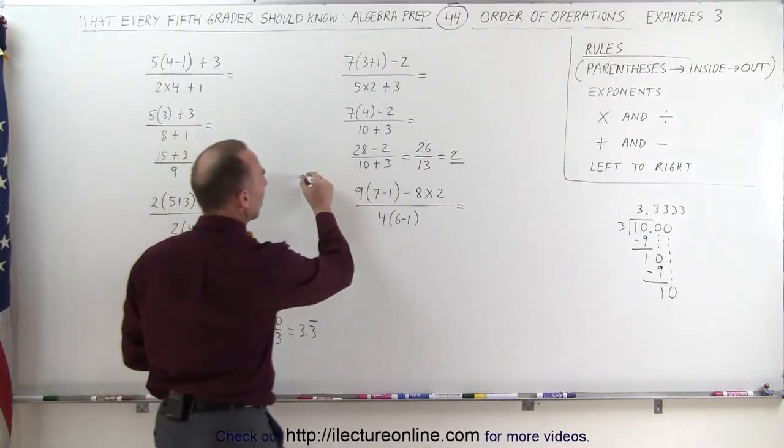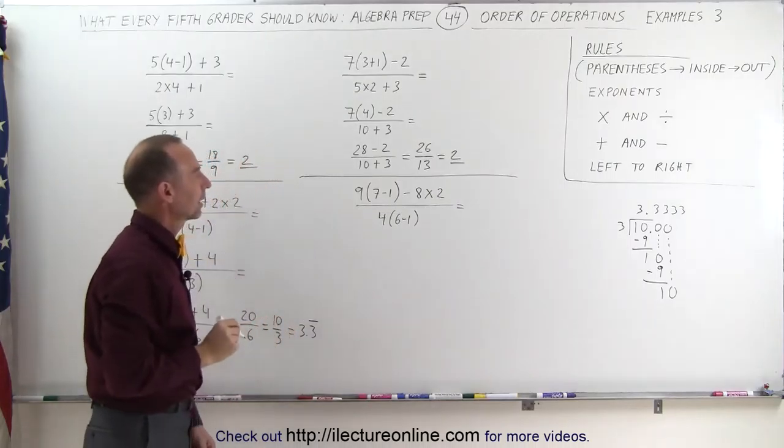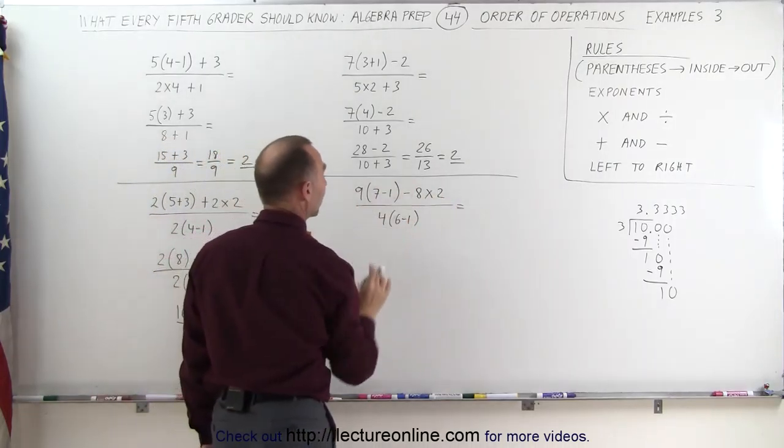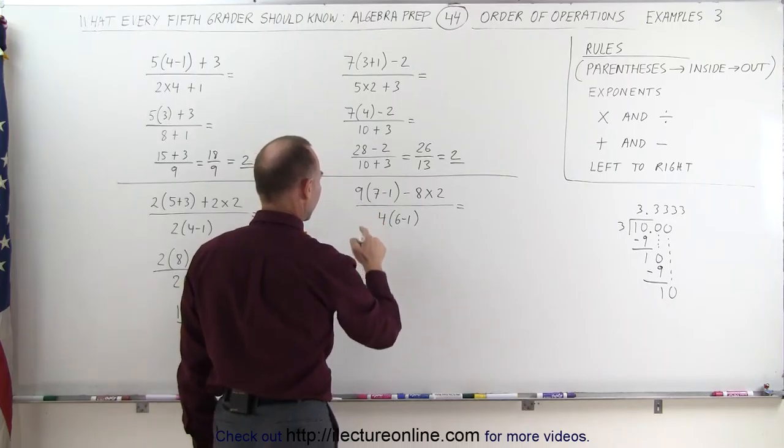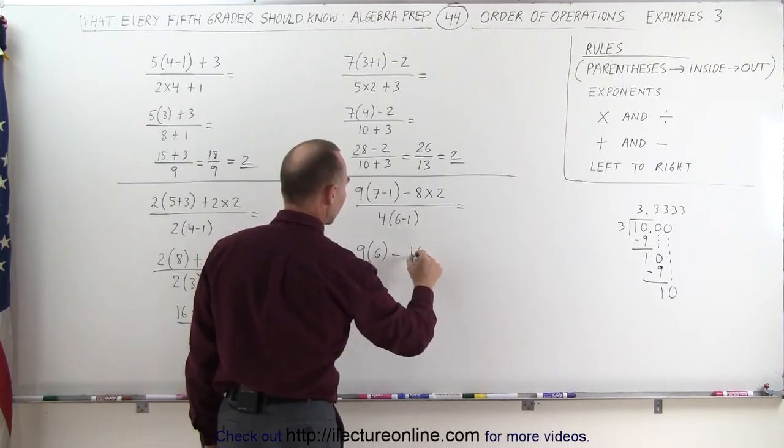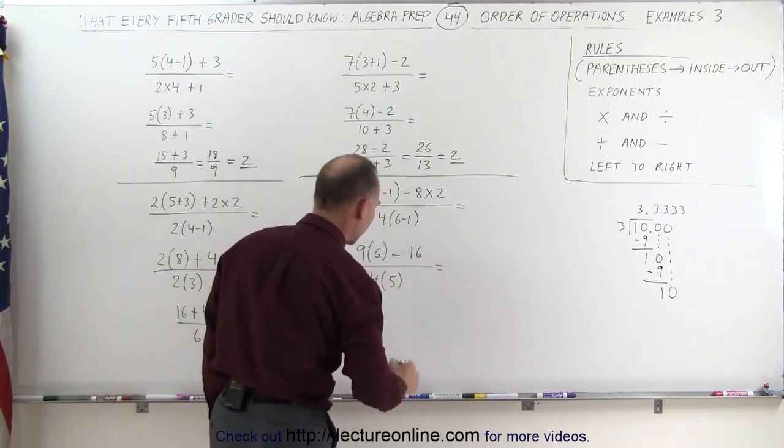Finally, let's look at this one, and let me draw a line in between here, so you can see that those are two different problems. Again, we want to work the parentheses first, and the multiplication first. So the first thing we do is 9 times 7 minus 1, which is 6, minus 8 times 2, which is 16, divided by 4 times what's inside of parentheses, which is 5.